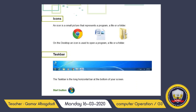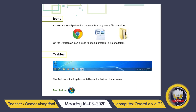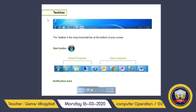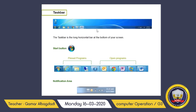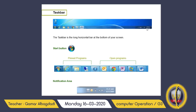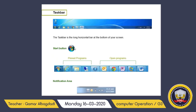On the desktop, an icon is used to open a program, a file, or a folder. Once you double-click on the icon, you can open the folder. The taskbar is the long horizontal bar at the bottom of your screen, from the notification area to the start button.